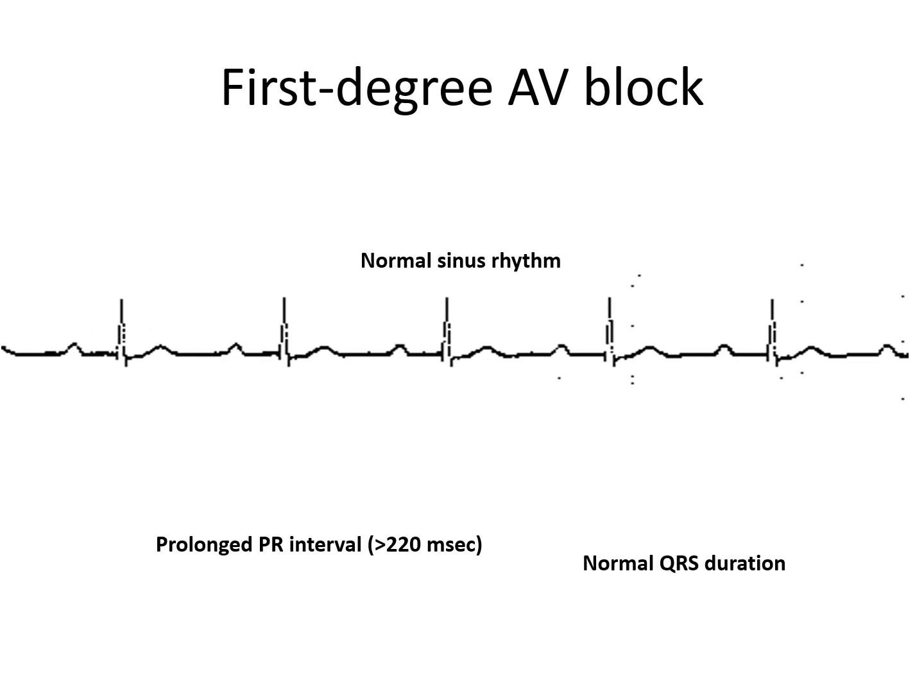First degree atrioventricular block: normal sinus rhythm, normal QRS complex but prolonged PR interval.